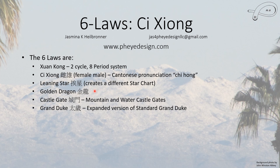The Six Laws also involves the golden dragon and the mountain and water castle gates — these are not the regular castle gates with the flying stars; they're different. There is also the Grand Duke, which is essentially an expanded version of the more standard Grand Duke. The standard Grand Duke is determined by the animal sign of the year, while this expanded one uses the entire Bazi of the year and analyzes it like a person, with clashes and combinations. Even this expanded version acknowledges that the most important Grand Duke is the year animal sign, so you can just use that.